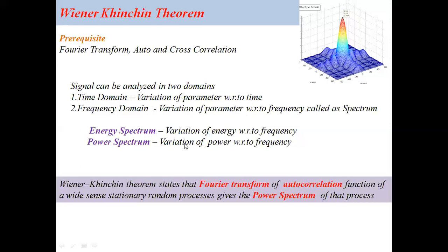If we consider variation of power with respect to frequency, we call it a power spectrum. The Wiener-Kinchin theorem states that the Fourier transform of the auto correlation function of a wide sense stationary random process gives the power spectrum of that process.